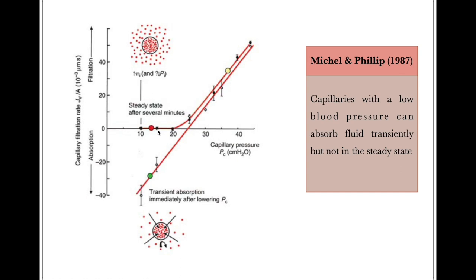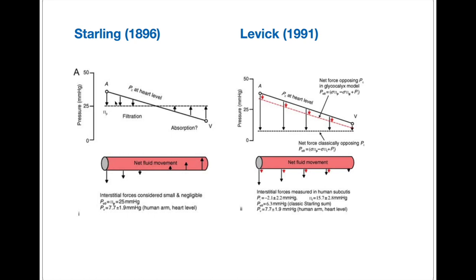In the traditional filtration-absorption model, at the arteriolar end, where capillary hydrostatic pressure is higher than osmotic pressure, filtration occurs. At the venular end, where hydrostatic pressure becomes less than oncotic pressure, reabsorption of fluid occurs. But as proposed by Michel and Philippe and later supported by Levick's work in 1991, as capillary hydrostatic pressure decreases, the filtration rate also decreases — but absorption of fluid never occurs in a steady state.